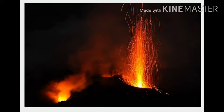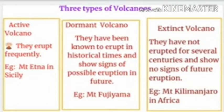A picture of Mount Stromboli is shown here. Another active volcano in Italy is Mount Etna. Pinatubo in the Philippines and Mauna Loa in Hawaii are also examples of active volcanoes.